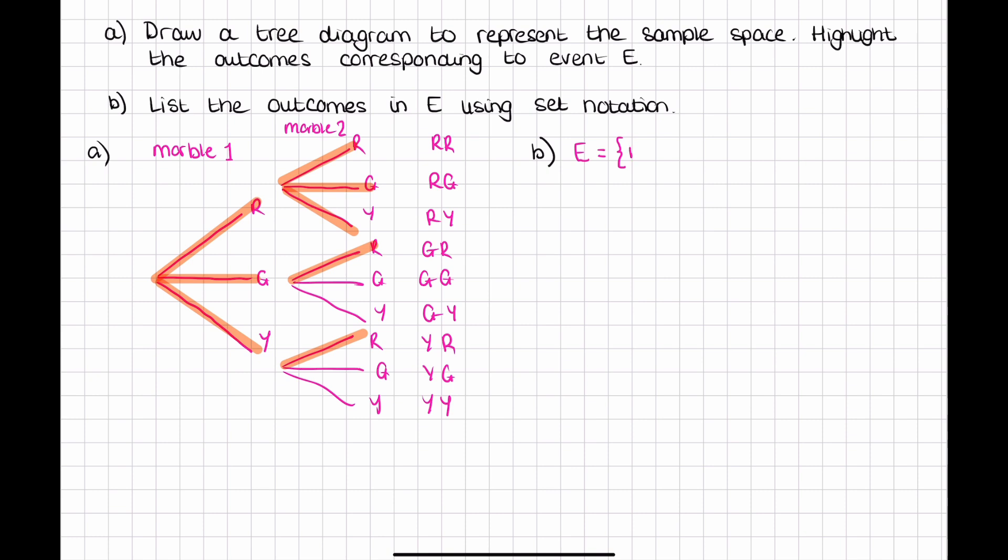So all those highlighted paths is what we're going to have. So our first one would be a red we pick out first then a red. Then we could have a red and a green or a red and a yellow. We could then have a green and a red or a yellow and a red. So they are all the options that we highlighted in that tree diagram.